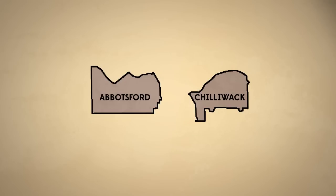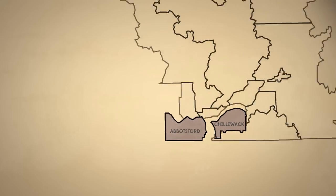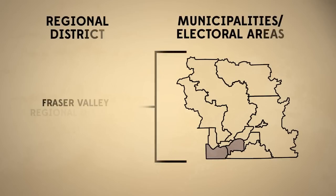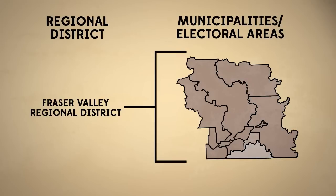For example, Abbotsford and Chilliwack are cities, and they also belong to the Fraser Valley Regional District, along with four district municipalities and seven electoral areas.